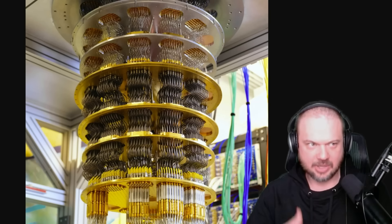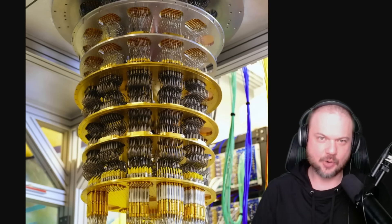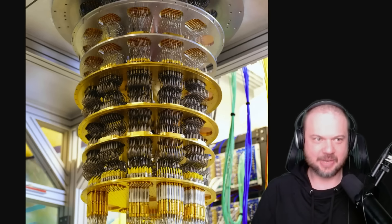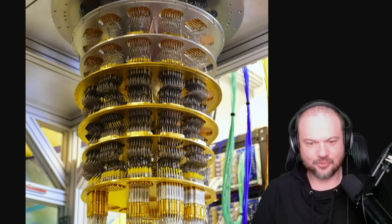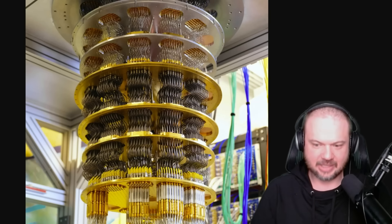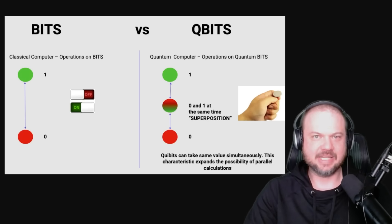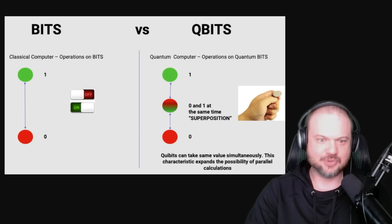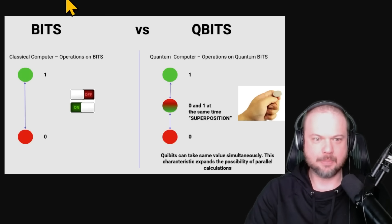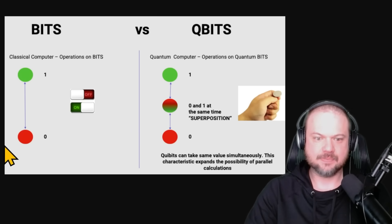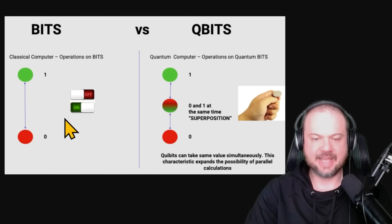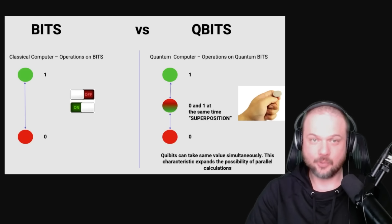What makes quantum computers so fast, so amazing, so futuristic? Normal classical computers — the ones that you and I use — they run on bits, ones and zeros. You can think of it as a light switch: it can only be on or off.